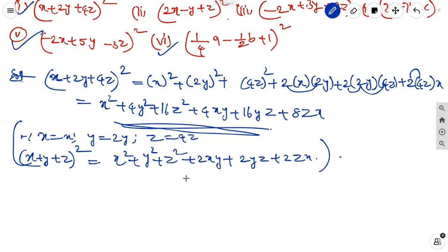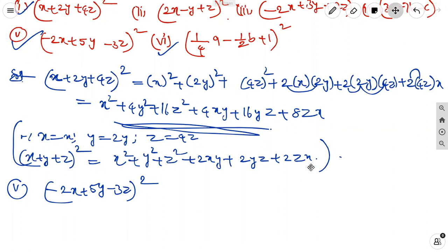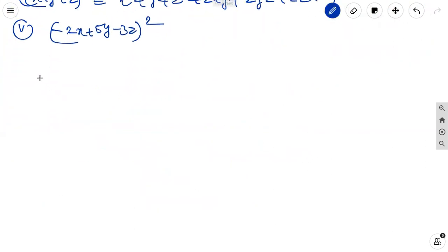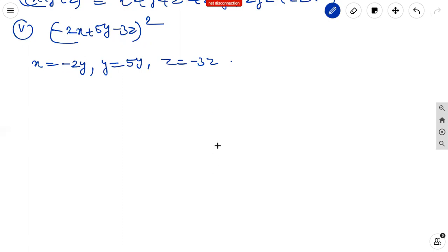For the fifth one, minus 2x plus 5y minus 3z whole square: take x equal to minus 2x, y equal to 5y, z equal to minus 3z in the identity, and then apply the same expansion to find the result.